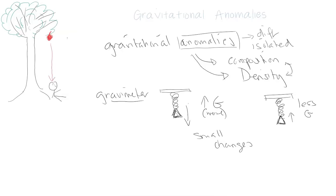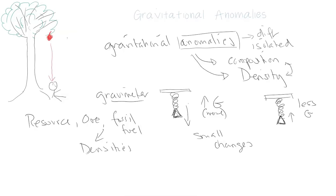Why do we care about this? Because humans like to use raw materials from the Earth's surface. Each type of resource — for example, the fossil fuels that we consume at a high rate around the world — has different densities. Rather than digging a huge hole, it's easier to remote sense and look at these gravitational anomalies across the crust and determine what is causing those anomalies to exist.